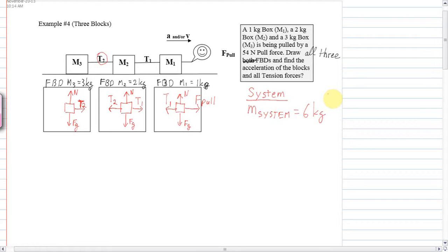There's not very many forces acting externally on this system. All the tensions don't count because they pull and push on internally. There's no friction. If there was friction on any of the boxes we would have to include it here, but there's no friction. The only thing that's pulling externally on this system is the pull force. So we add up all the forces and that's just going to be F pull, and that is 54 Newtons.